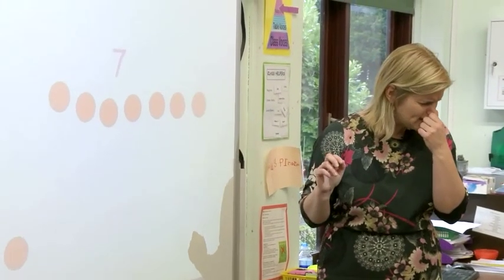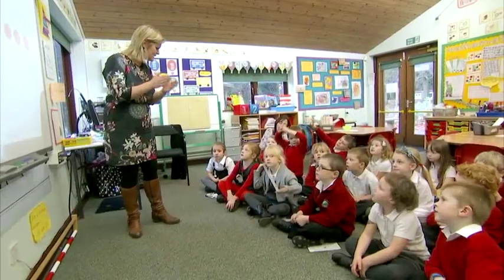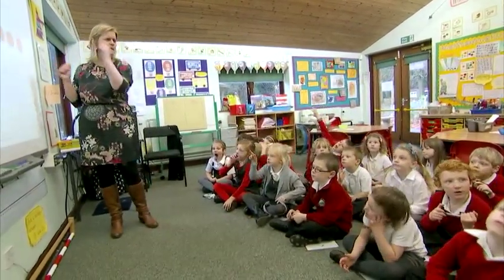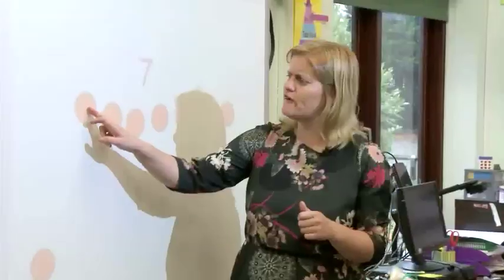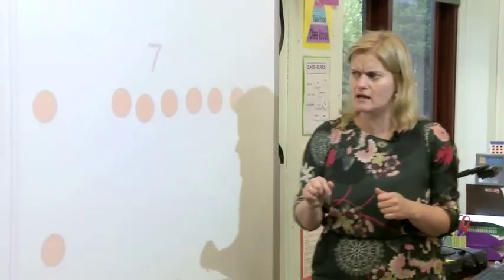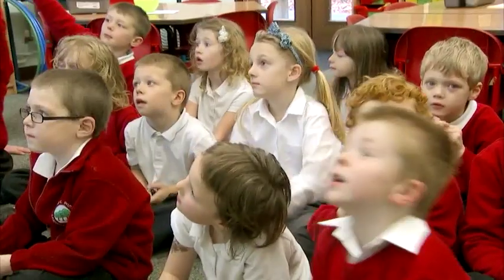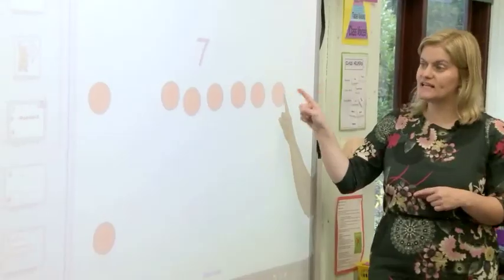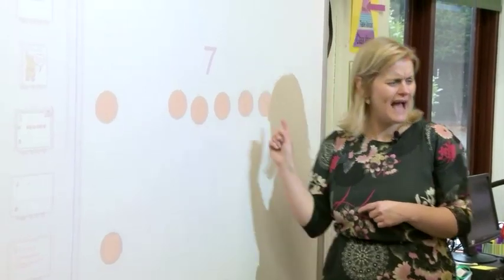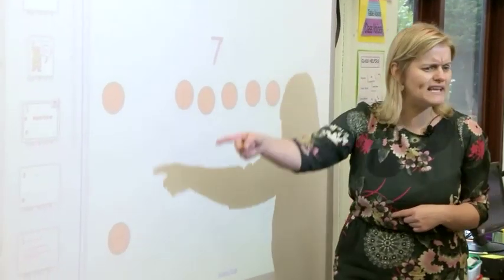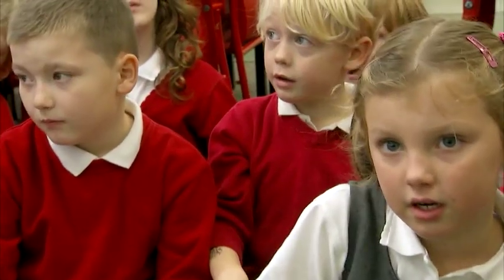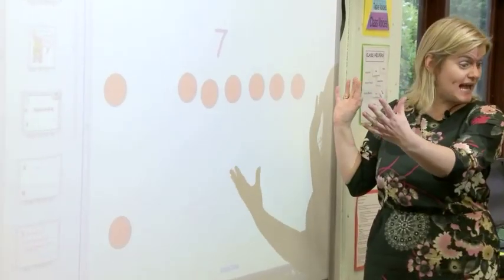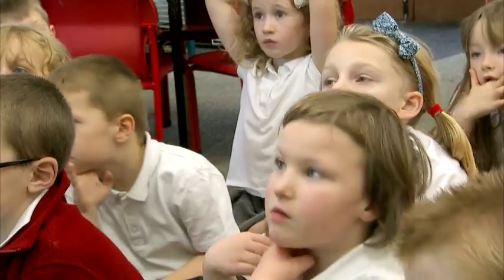I'm going to split my 7 counters. If I move one counter over here, how many counters have I got over here? 1, 2, 3, 4, 5, 6. So I've got 6 over here and 1 over here. How many counters have I still got altogether? 7. I've partitioned my 7 counters into 1 and 6.